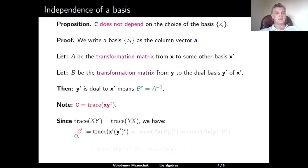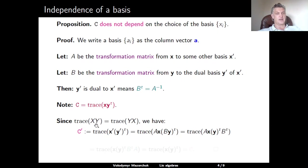Let us compute the Casimir element C prime associated to the basis X prime. This is a trace of the product X prime times Y prime transpose. Using X prime = AX and Y prime = BY, we rewrite this as trace of AX(BY)^T. Writing (BY)^T as Y^T B^T, we then use the cyclic property of the trace — that trace(XY) = trace(YX) — to move A all the way to the right. We have trace of X Y^T B^T A, and using that B^T = A^{-1}, the last two factors cancel. What remains is the trace of XY^T, which is exactly the original Casimir element. This completes the proof of the proposition.